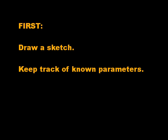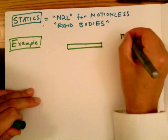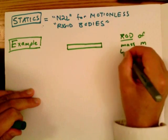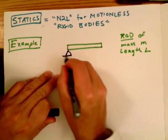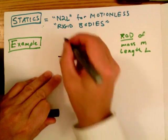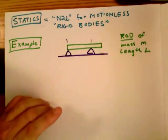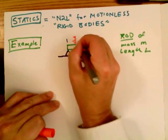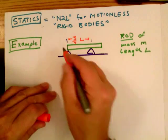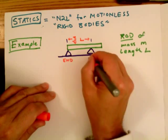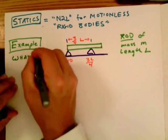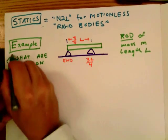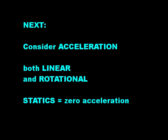So first we draw a sketch, keep track of what the known parameters are. So for example, in this problem, I'm going to represent the pencil as a rod of mass given M and a length given L. And I'm going to rest the rod at two points, one on the left, right at the end of the rod, and one about three-fourths of the way down the rod. So we'll mark that distance as three-fourths of the length. So we want to know what are the forces on the rod? What are the forces applied by the fingers or the trestles?